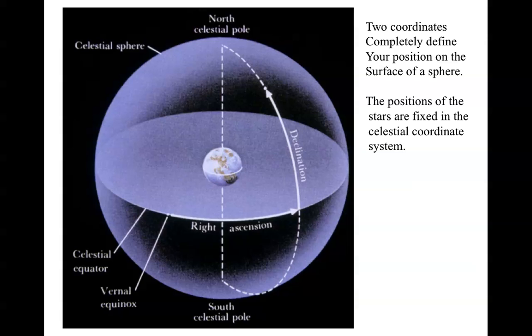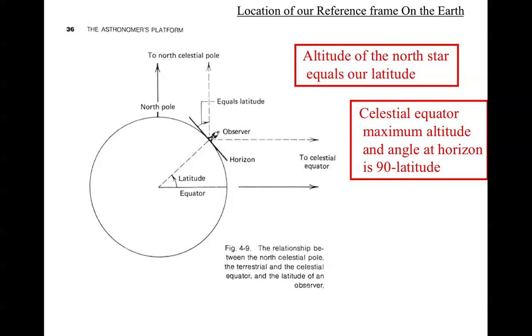But of course, we're not in the celestial coordinate system, we're sitting on the surface of the Earth, and the Earth is turning. In our local coordinate system, we want to understand how the stars will appear to move as the Earth turns.